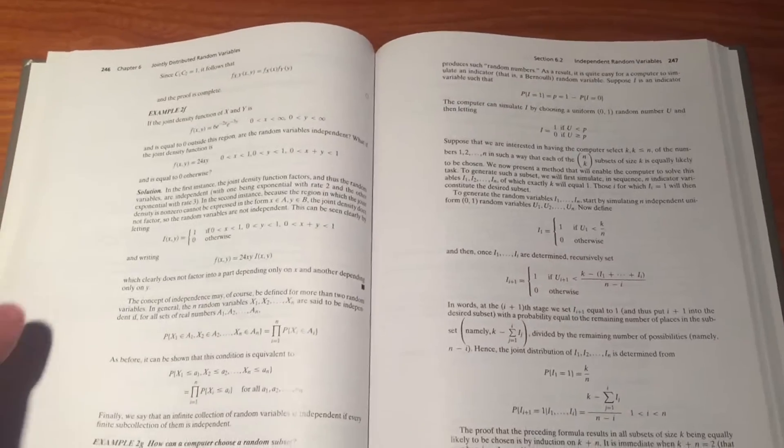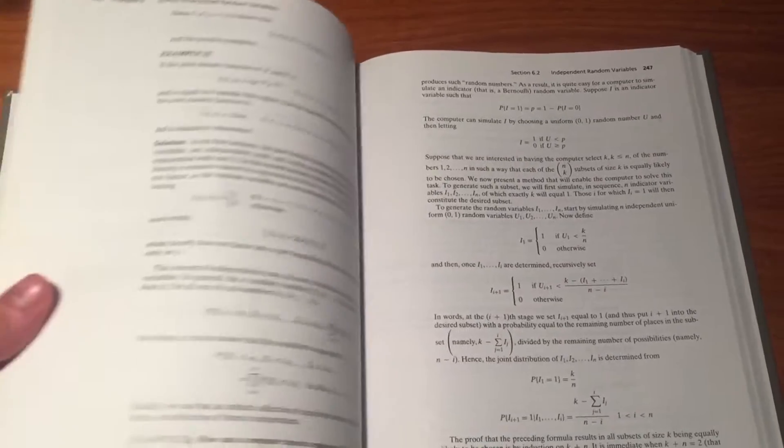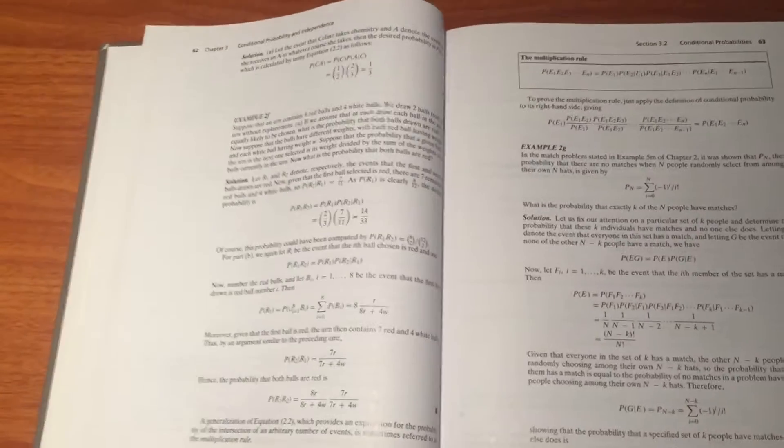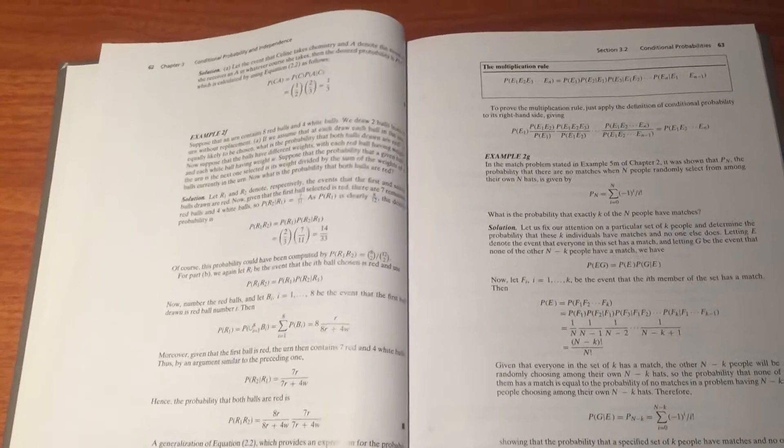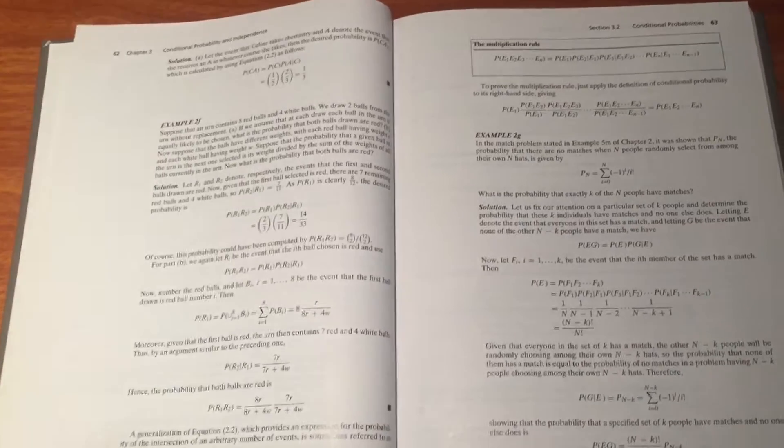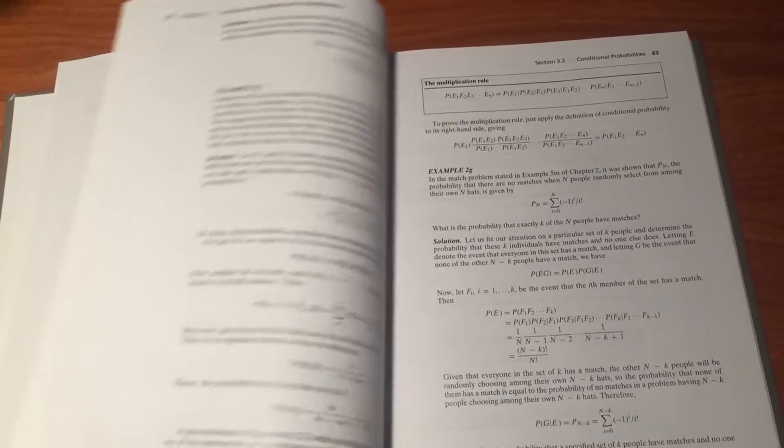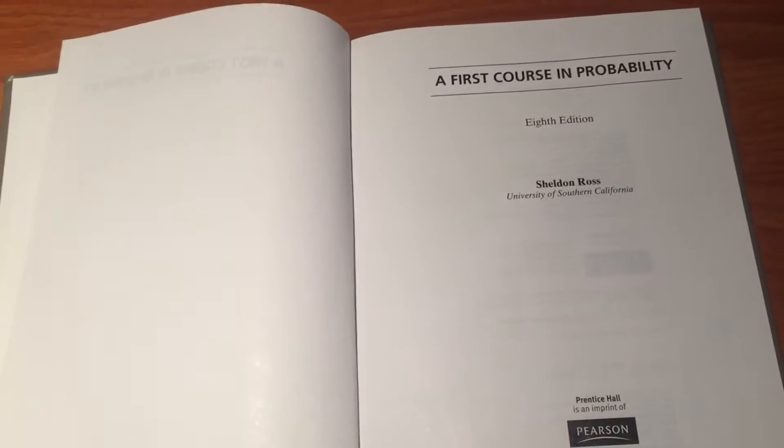But overall, a really good book if it's your first class in probability. I really can't say anything bad about it other than it's a little bit tough to read. It's a little bit dense. And also that it didn't have those tables I was looking for.